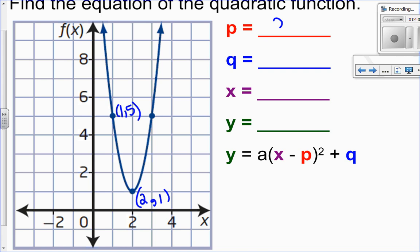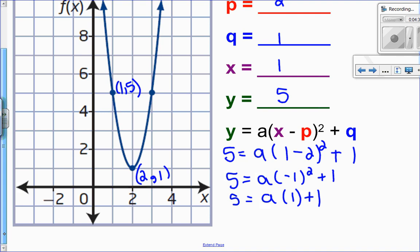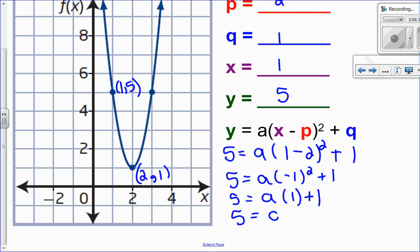So let's plug in P and Q, X and Y, and I solve for my A value. Always solve for A. So Y equals A times X minus P squared plus Q, which is 1. So 1 take away 2 is negative 1. Negative 1 squared means negative 1 times negative 1, which is positive 1. And A times 1 is just A plus 1. So I'll just subtract 1 from both sides, and I get an A value of 4.